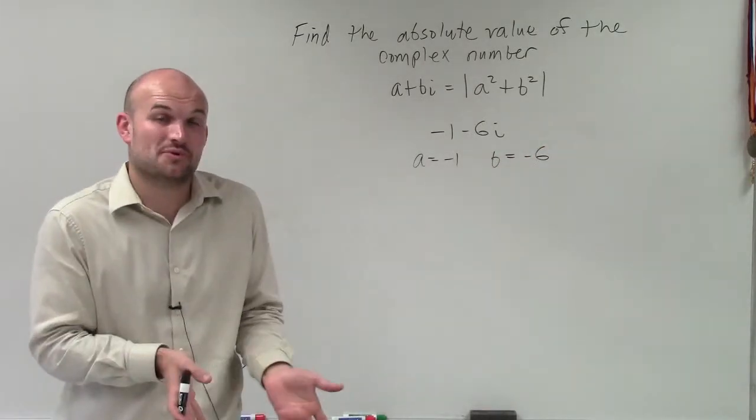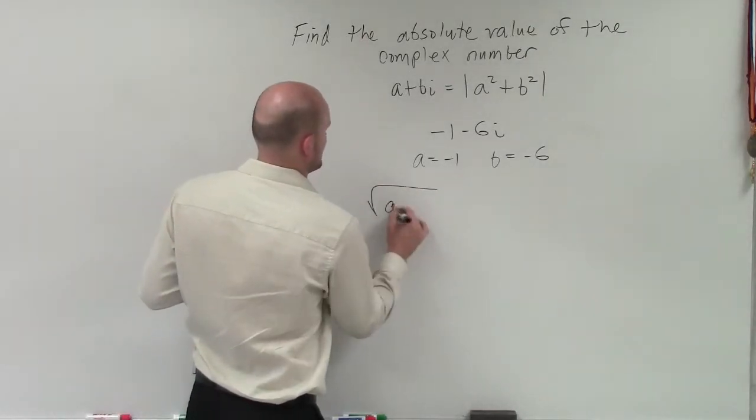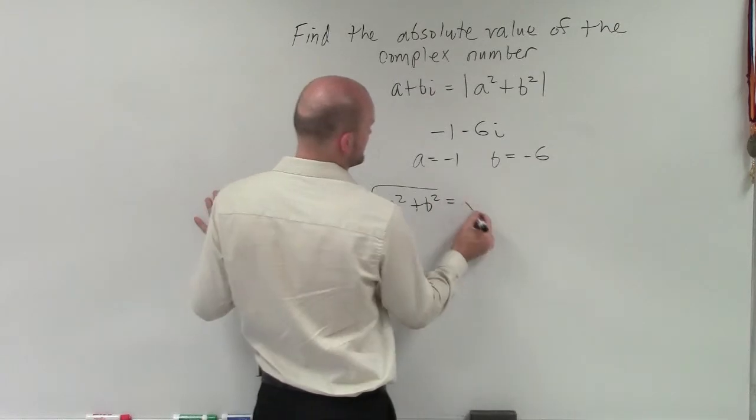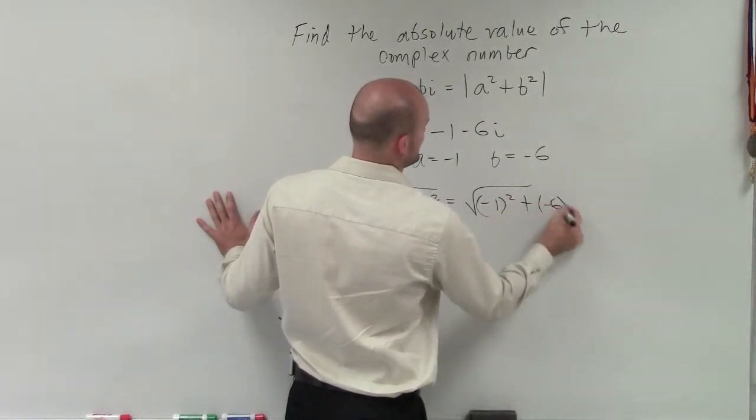So all I'm going to do is take the square root of a squared plus b squared. In this case, it's going to be the square root of negative 1 squared plus negative 6 squared.